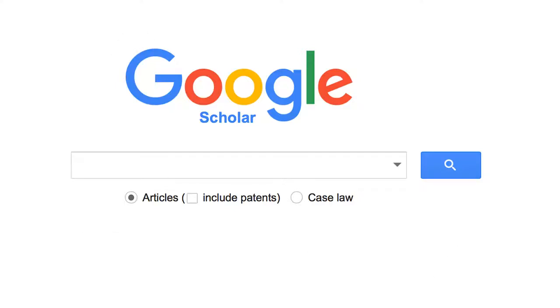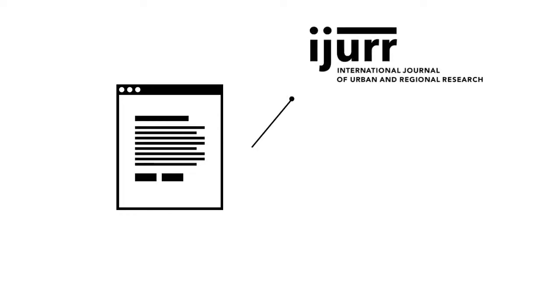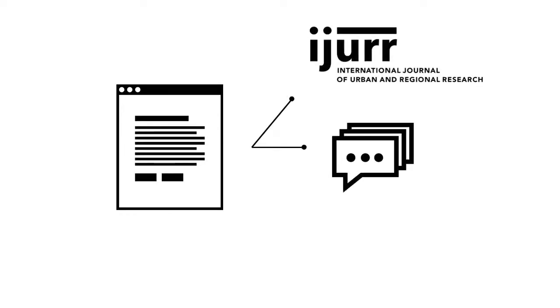The benefit of using Google Scholar instead of regular Google is that it aims to rank documents the way researchers do, weighing the full text of each document, where it was published, who it was written by, as well as how often and how recently it has been cited in other scholarly literature.